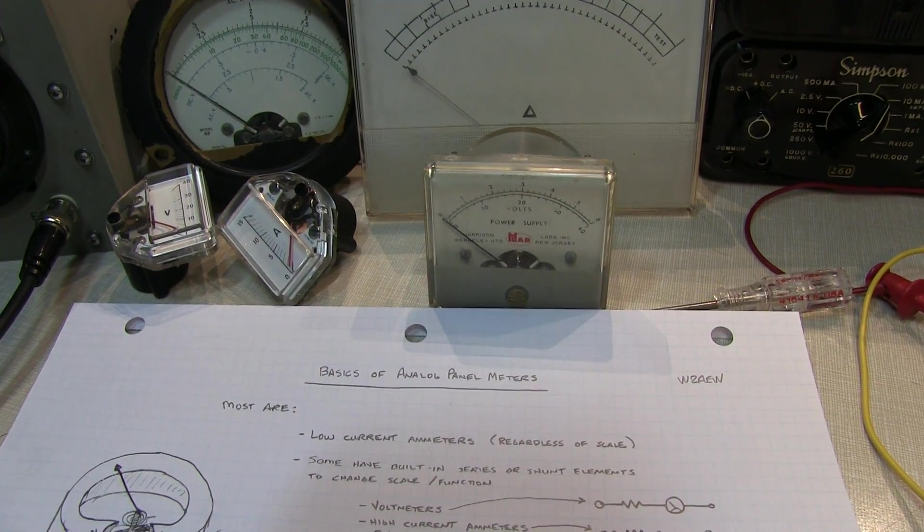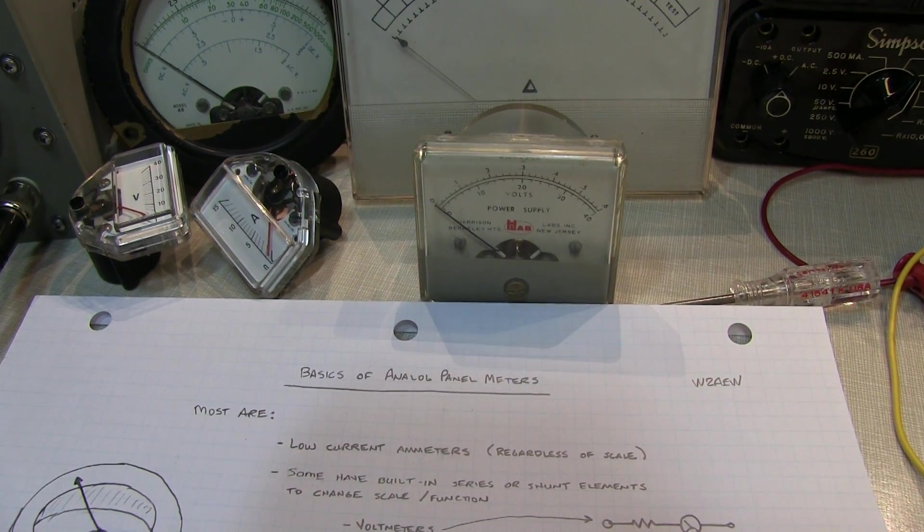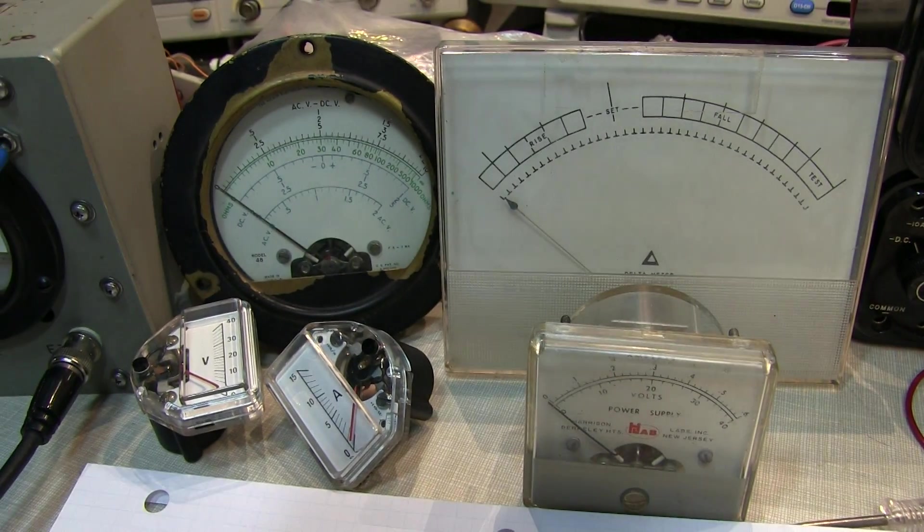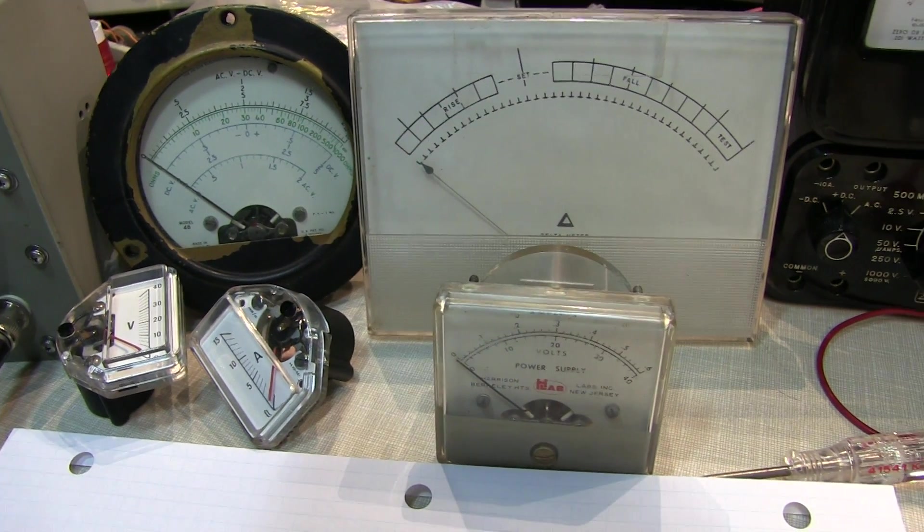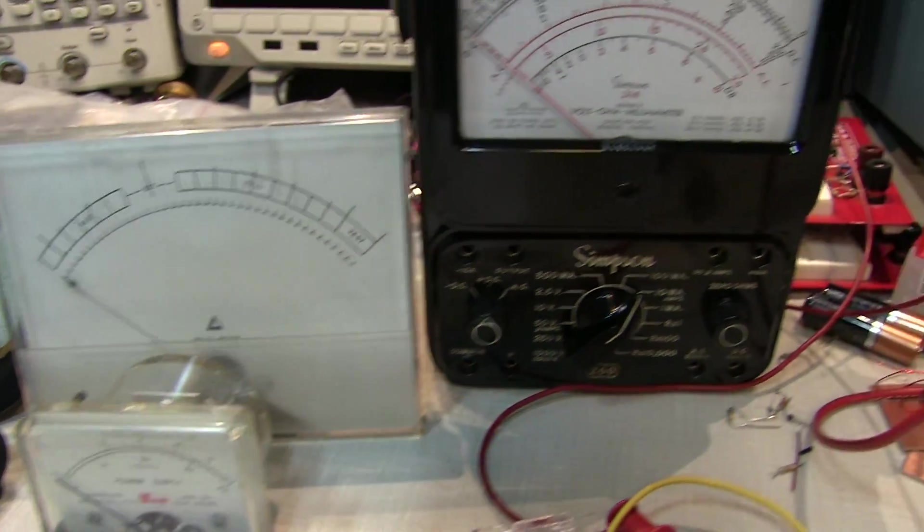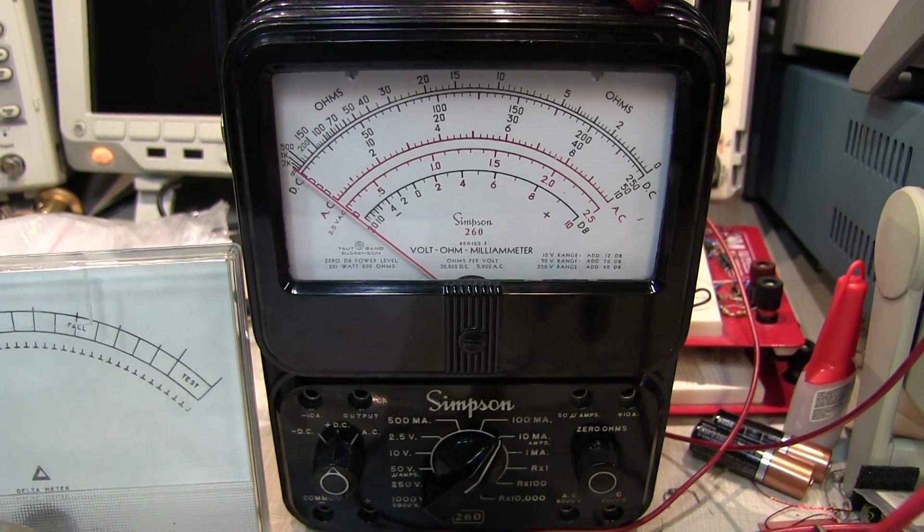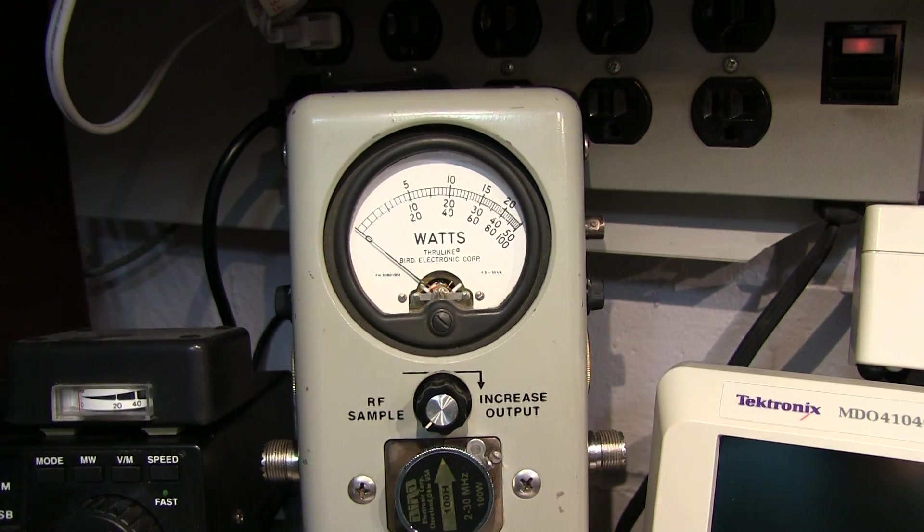In today's video, we're going to talk about analog panel meters, or analog meter movements like these here on the bench. You've seen these types of meters in lots of equipment that I've used in videos in the past, like my trusty Simpson 260 VOM, or even the Bird 43 RF wattmeter.